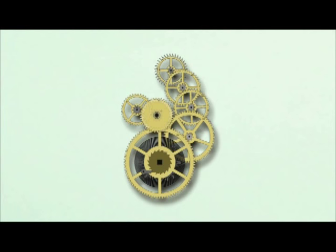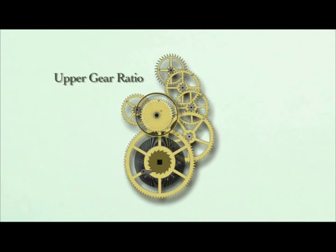The wheels above the center wheel are accelerated even more until we get to the escape wheel. It may turn several thousand times per day. The upper gear ratio between the center arbor and the escape wheel is selected to allow shorter or longer pendulum lengths.